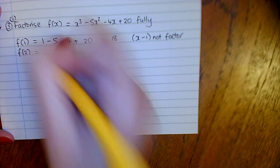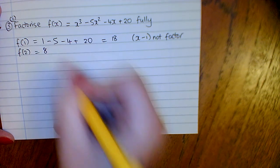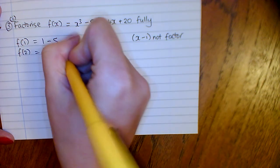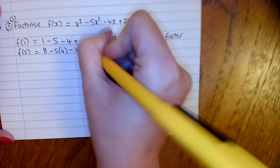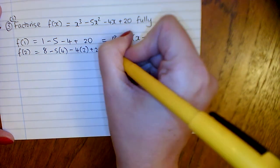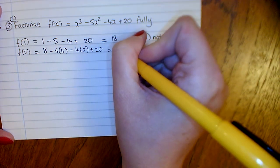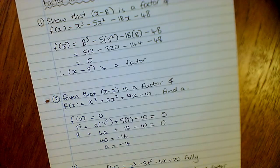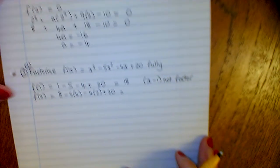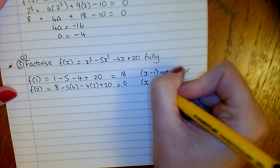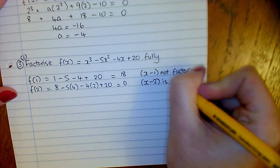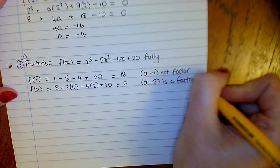So go to f of 2. That's 8 minus 5 times 4 minus 4 times 2 plus 20. It turns out to be 0, so therefore x minus 2 is a factor.